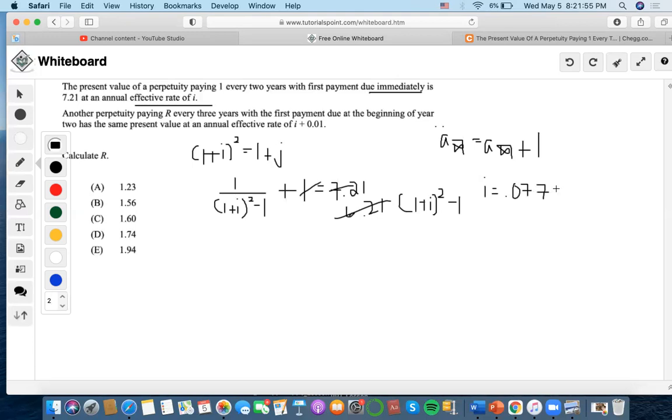Now for a perpetuity paying r every three years with first payment due at the beginning of year 2, which occurs here. We would have to discount it one period back to zero.